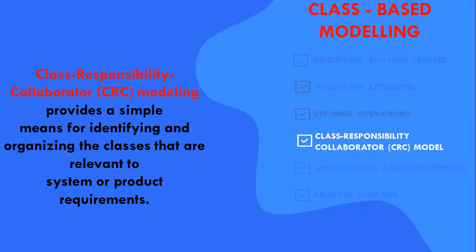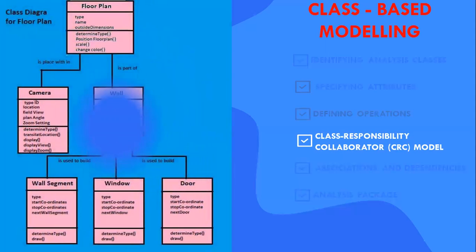A CRC model is really a collection of standard index cards that represent the classes. These cards are divided into three sections. Along the top of the card, we write the name of the class. In the body of the card, we list the class responsibilities on the left and we write the collaborations on the right. In reality, the CRC model may make use of actual or virtual index cards.